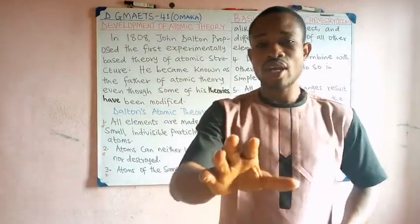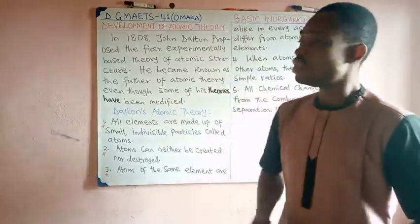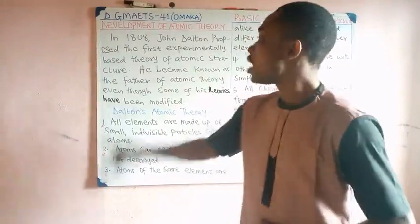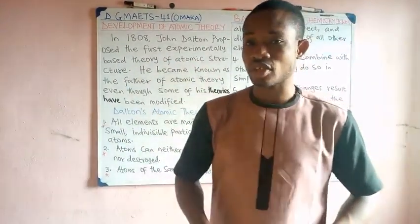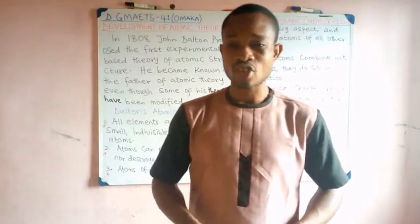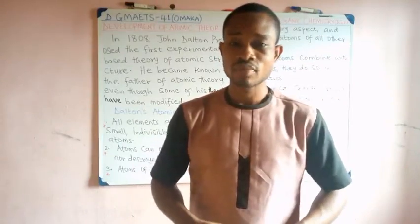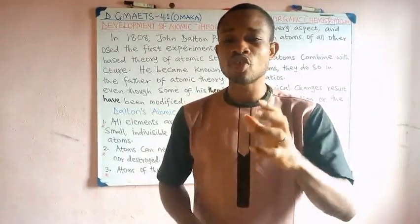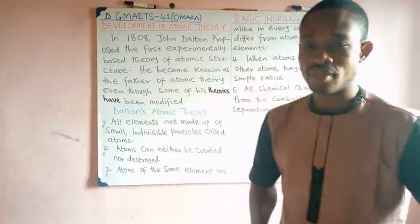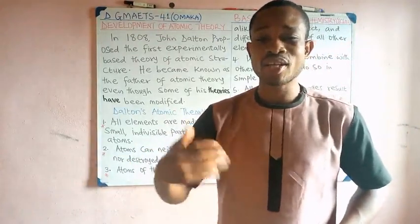We begin with John Dalton's atomic theory. In 1808, John Dalton proposed the first experimentally based theory of atomic structure. He later became known as the father of atomic theory, even though some of his theories have been modified. We have five of Dalton's postulates to consider, and we are also going to look at those that have been modified and why they were actually modified.